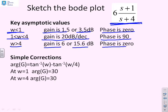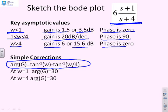Some corrections that we can put in. First, the argument of this lead is exactly tan to the minus 1 of omega minus tan to the minus 1 of omega over 4. If I substitute in the values of the corner frequencies omega equals 1 and omega equals 4, you'll notice they both give the same value — they both give 30 degrees.